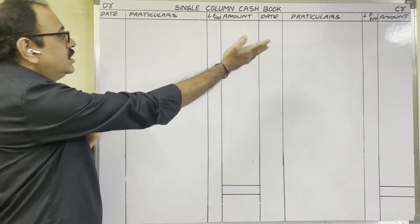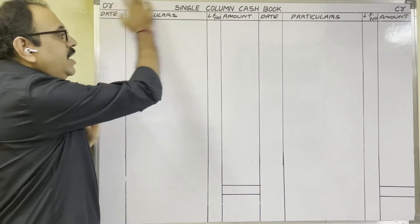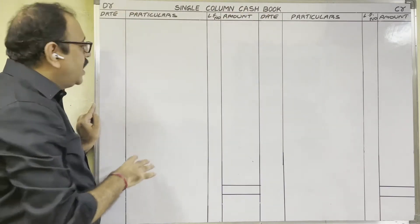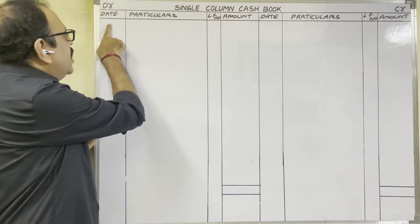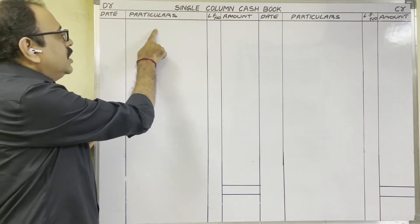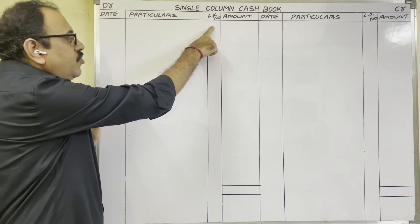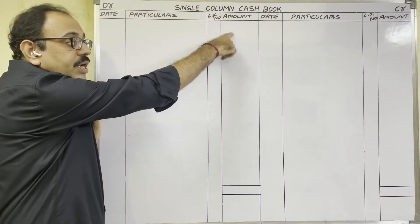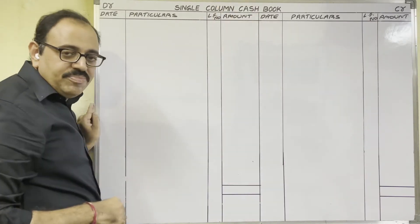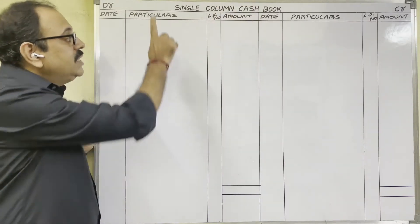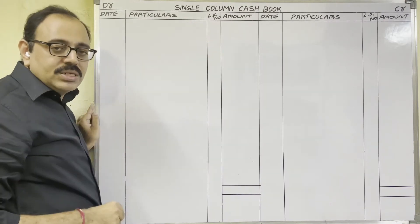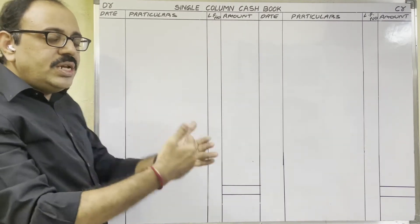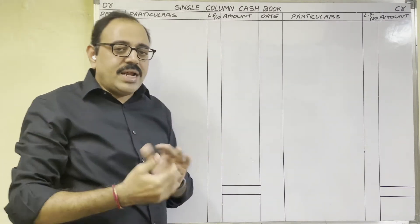The format of the single column cash book is divided into two sides: debit side and credit side. Columns are date, particulars, ledger folio number, and amount. The credit side has the same columns. To prepare the single column cash book there are two methods.